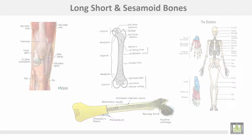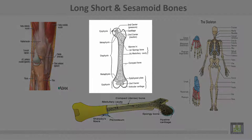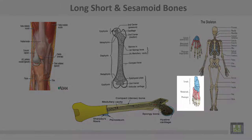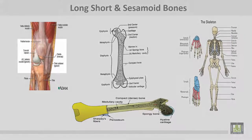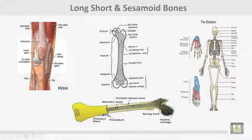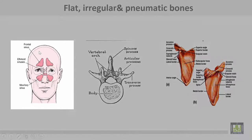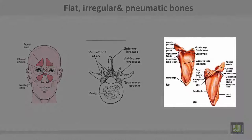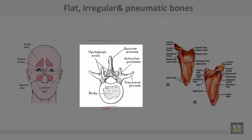These are the long bones. These are the short bones, such as tarsal bones and the carpal bones. This is the sesamoid bone — the patella — here inside the quadriceps tendon. These are pneumatic bones, some bones of the skull that contain air. This is a flat bone, and this is an irregular bone.